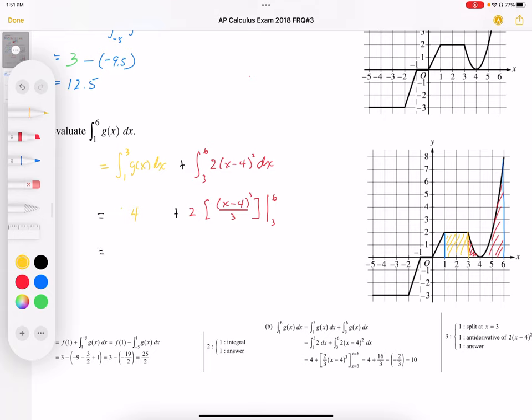So this becomes 4 plus, when I plug this in, I'm going to take my 2/3, that coefficient outside, and then substituting in x is 6, we get (6 minus 4) cubed minus (3 minus 4).